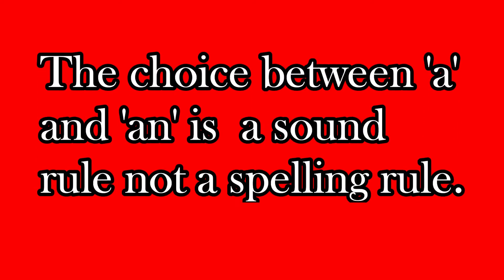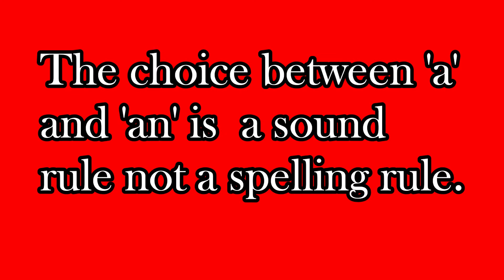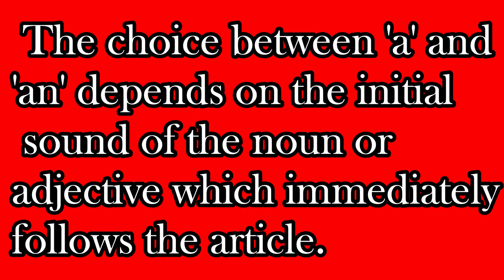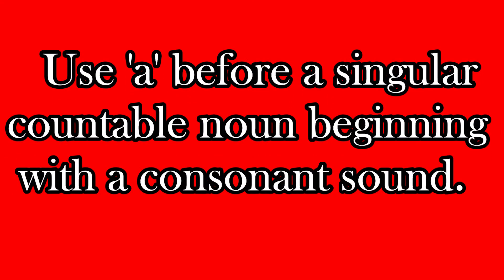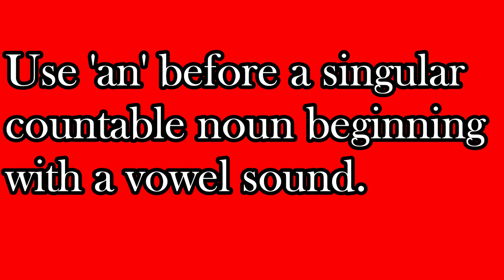A and AN are indefinite articles. The choice between A and AN is a sound rule, not a spelling rule. The choice depends on the initial sound of the noun or adjective that immediately follows the article. Use A before a singular countable noun beginning with a consonant sound, but use AN before a singular countable noun beginning with a vowel sound.